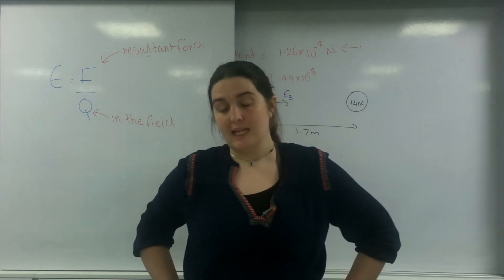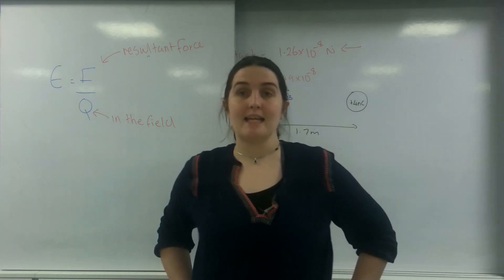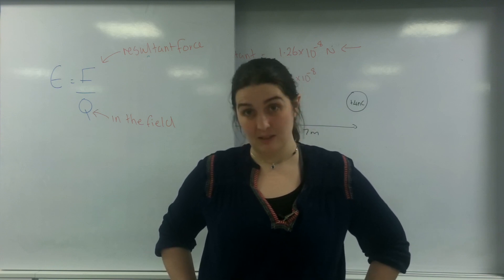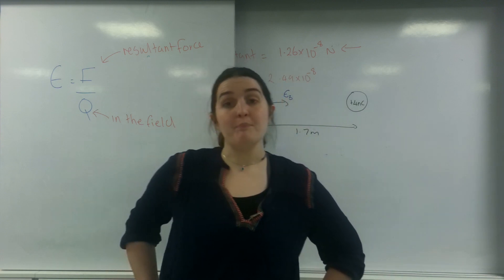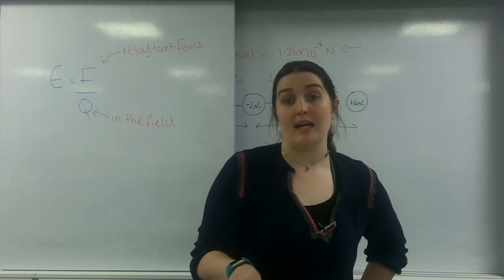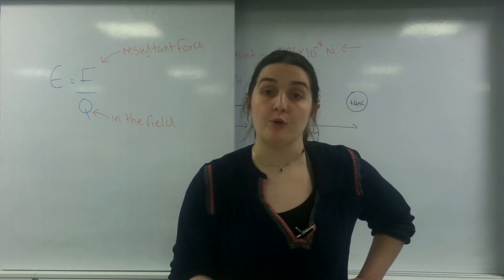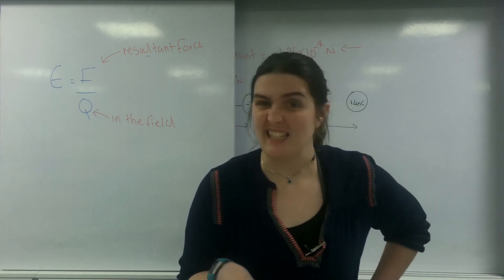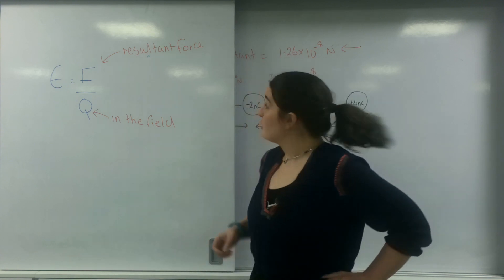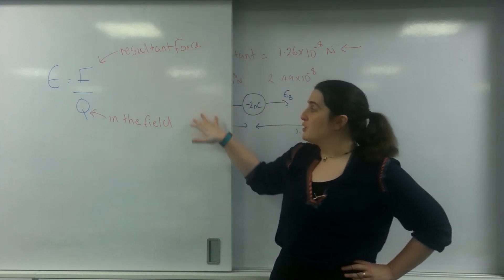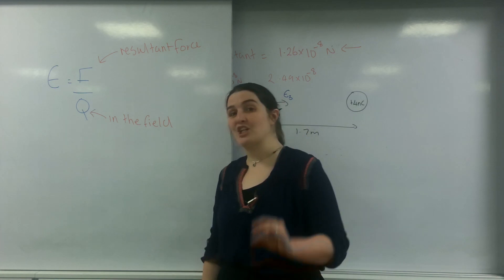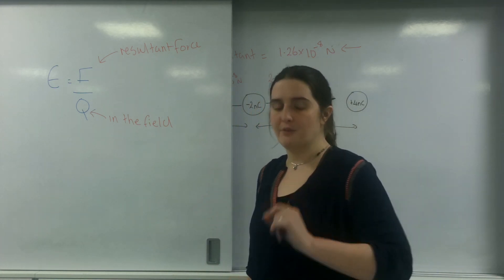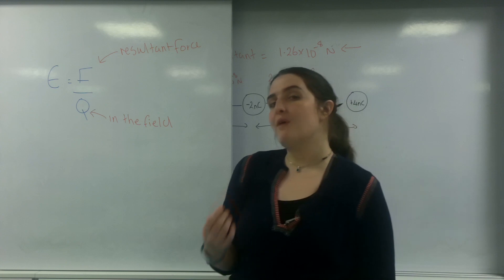Good evening and welcome to TR Physics. Today I am going to talk about electric field strength in a radial field. Electric field strength is the resultant force divided by the charge of the object that's feeling the field — not the charge that's causing the field, the charge that's in the field.